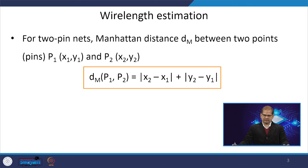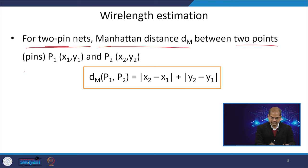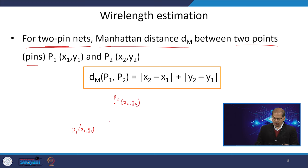Wire length estimation is one of the most important parts whenever you are doing any kind of VLSI placement. For a two-pin net, we can find the Manhattan distance dm between two points. Let us say we have point p1 with coordinate (x1, y1) and point p2 with coordinate (x2, y2).